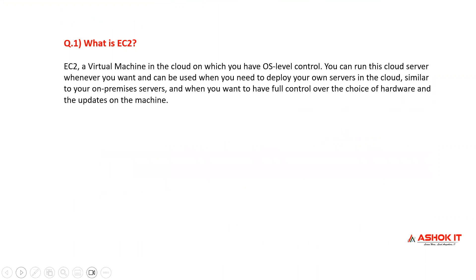Question one: What is EC2? EC2 is a virtual machine in the cloud on which you have OS-level control. You can run this cloud server whenever you want, and it can be used when you need to deploy your own server in the cloud, similar to your on-premise server, and when you want to have full control over the choice of hardware and updates on the machine.